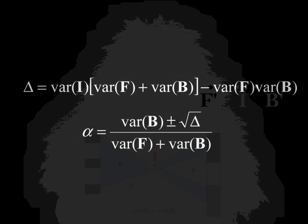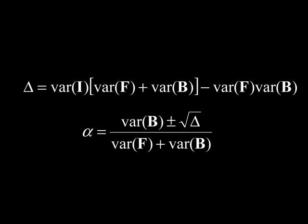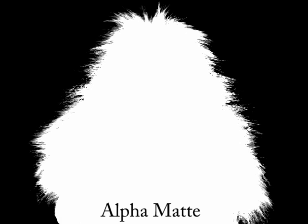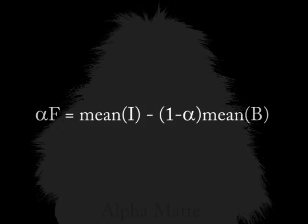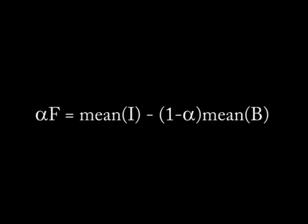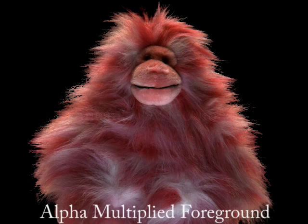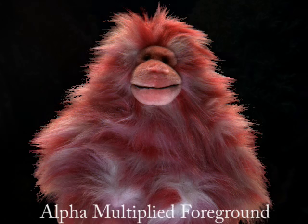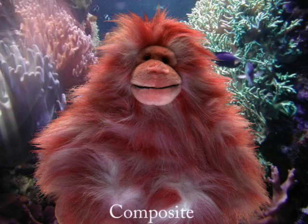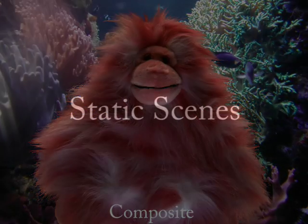We use the variance statistics to solve for alpha. Once we have solved for alpha using variance measurements, we use the mean statistics to solve for the alpha-multiplied foreground. We can then composite our foreground object over a new background.